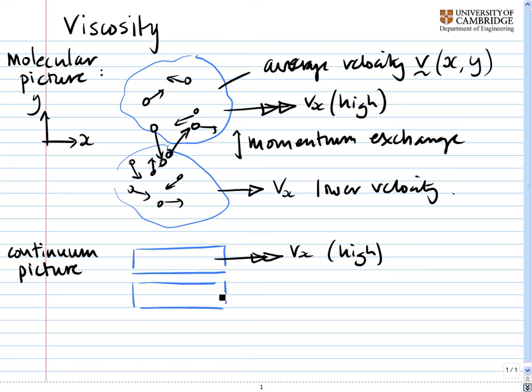And let's imagine another layer of the continuum underneath going slightly slower at vx which is the lower velocity, which is this velocity here.